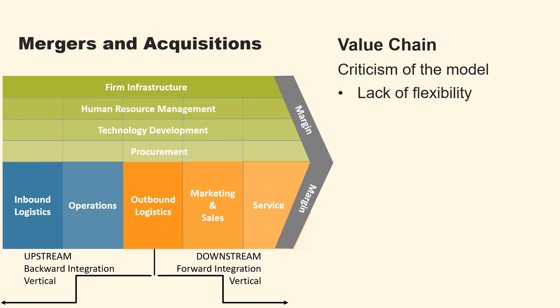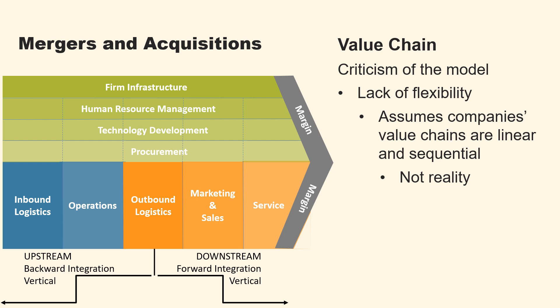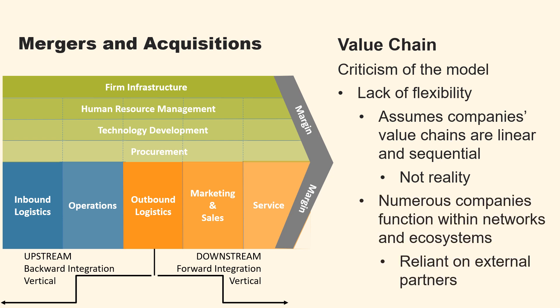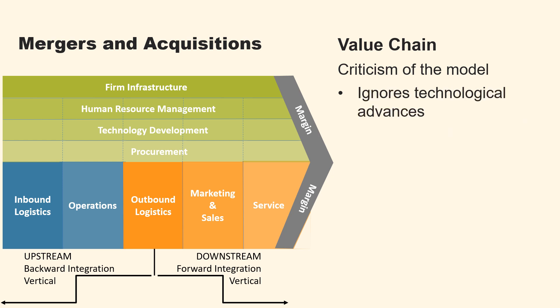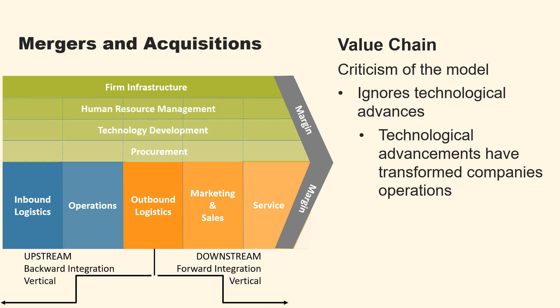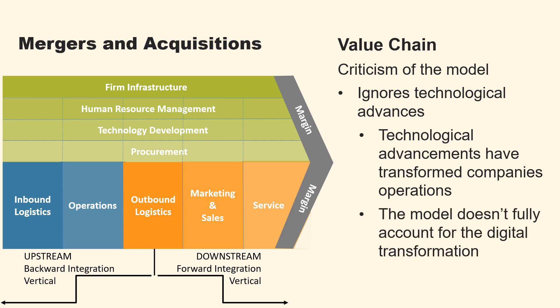The model lacks flexibility: it presupposes that companies operate with linear and sequential value chains, which may not always reflect reality. Numerous companies function within networks and ecosystems, engaging in interactive activities reliant on external partners. The model also ignores technological advances: technological advancements and digitalization have transformed company operations, and Porter's model, conceived in the 1980s, doesn't fully account for the digital transformation prevalent in today's businesses.